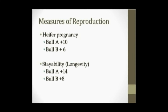We do have some EPDs for metrics of reproduction. Two represented here are heifer pregnancy and stayability, published by several U.S. beef breeds. A higher EPD is more desirable. Daughters sired by bull A are four percent more likely to conceive as heifers, and from the stayability example, daughters from bull A are six percent more likely to stay in the herd until age six and remain productive.